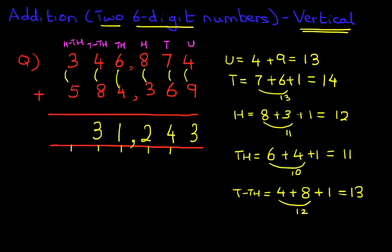And lastly, we have the hundred thousands. That is 3 plus 5 plus the 1 we have carried over. So 3 plus 5 is 8, plus the 1 is 9.